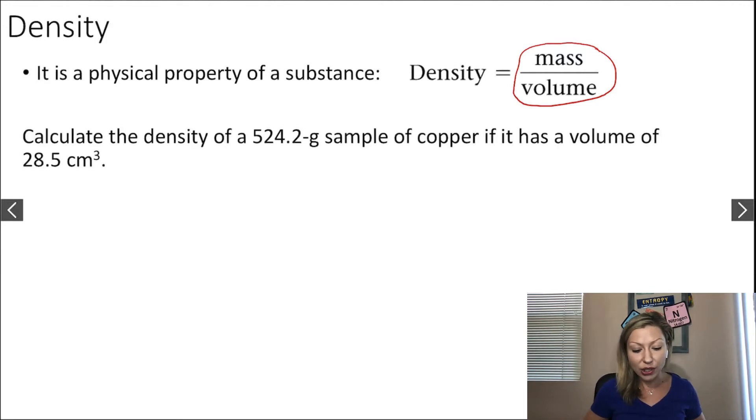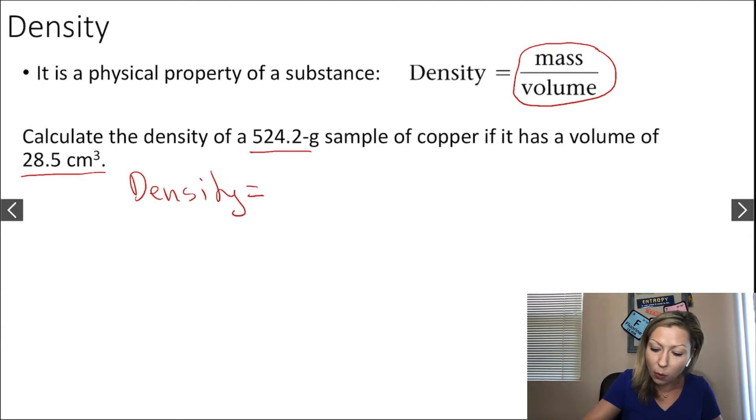In the first question, we have to calculate the density of a 524.2 gram sample of copper if it has a volume of 28.5 cubic centimeters. I simply take the density formula: it equals mass over volume. Do I have the mass given? Yes. So the mass is 524.2 grams.